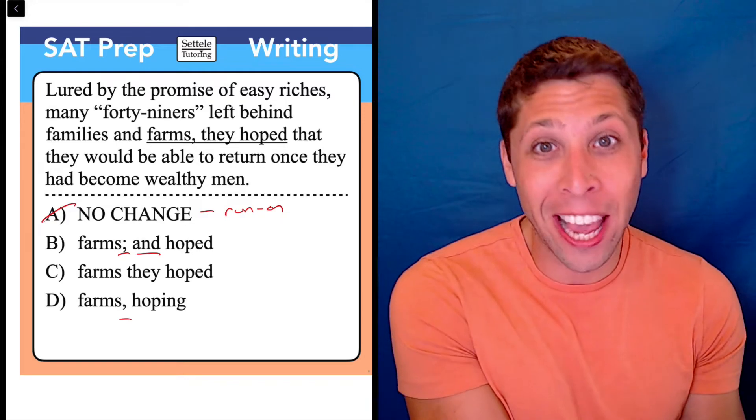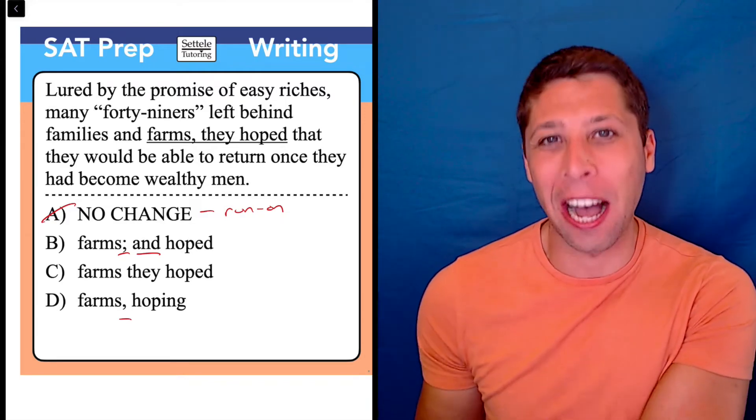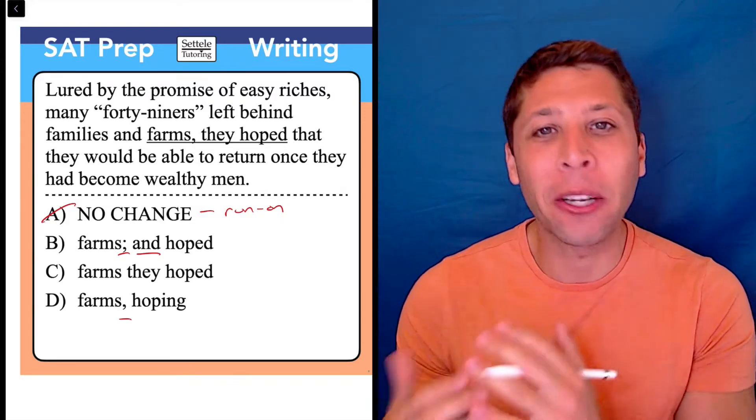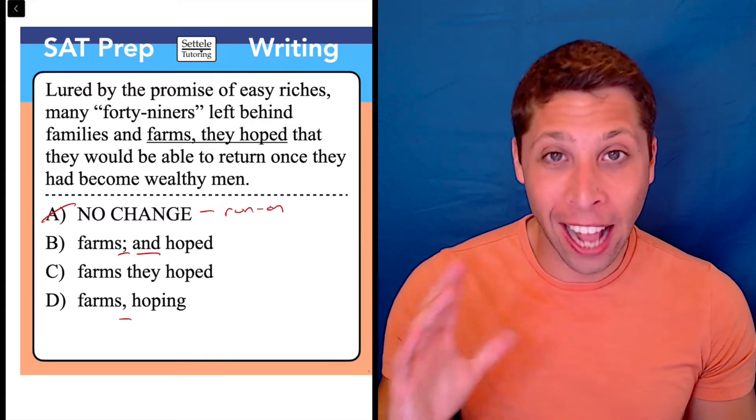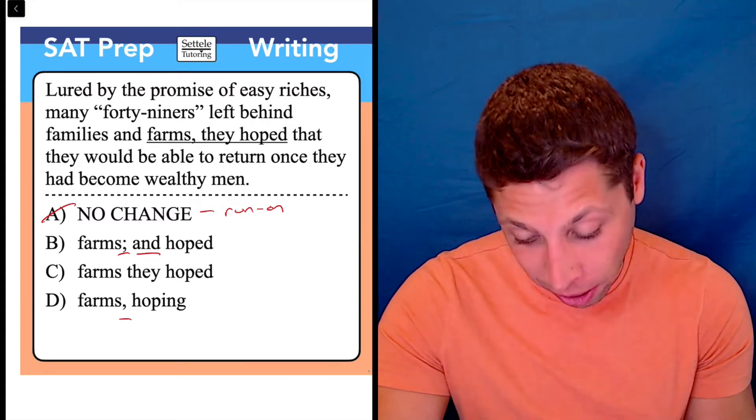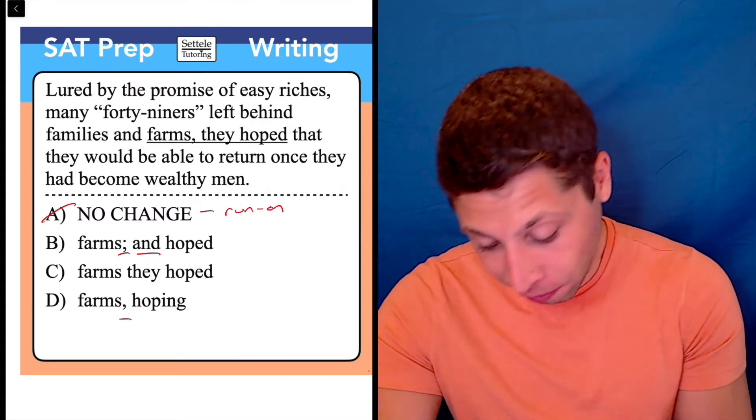If we wanted to just use the 'and,' we could use the comma that's already there, but the semicolon we would just kind of treat it like a period and just insert it where the comma is in choice A. It's very confusing. That's kind of the point.